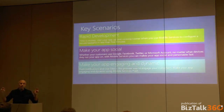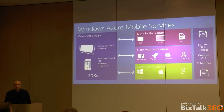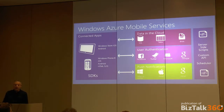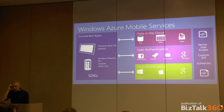This integration is made through an OAuth authentication flow. On the left-hand side we have the connected applications: Windows Store, iOS, Android, Windows Phone 8, and HTML5 plus JavaScript. For data, when you create a mobile service, you have the chance to create a SQL Azure database or select an existing one. For user authentication, you can rely on Facebook, Twitter, Microsoft, and Google, or configure your mobile service to use these identity providers.